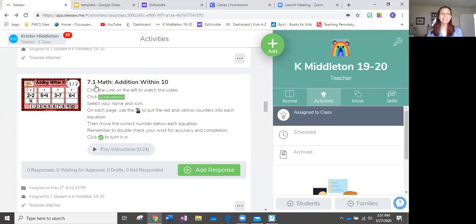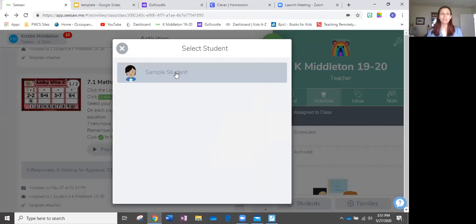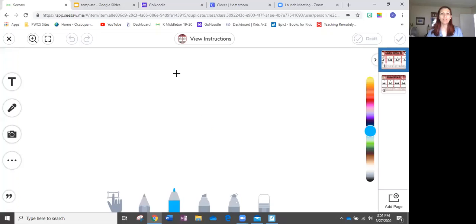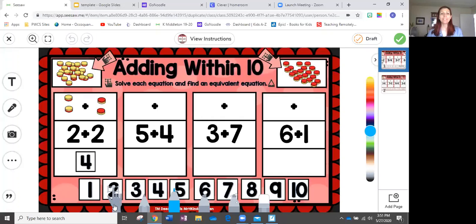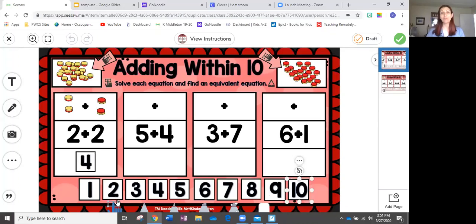Here you're going to look for activity 7.1 math addition within 10. Click add response. Select your name and icon. On this page, you're going to want to select the hand because you're going to be moving some of the red and yellow counters to complete your number sentence.